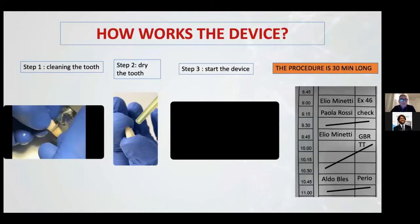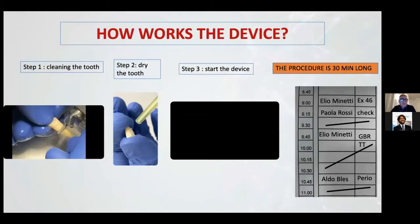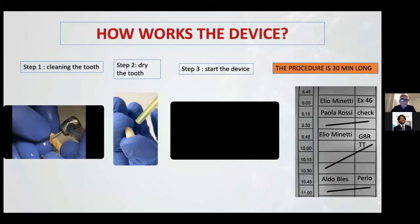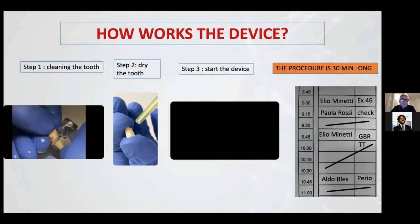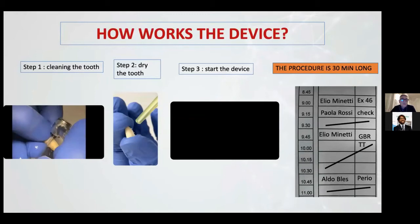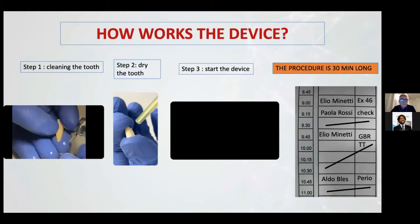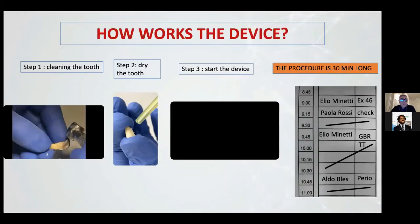The first step to use the tooth is cleaning the tooth. We use a high-speed diamond bur and clean the surface, then cut the tooth.